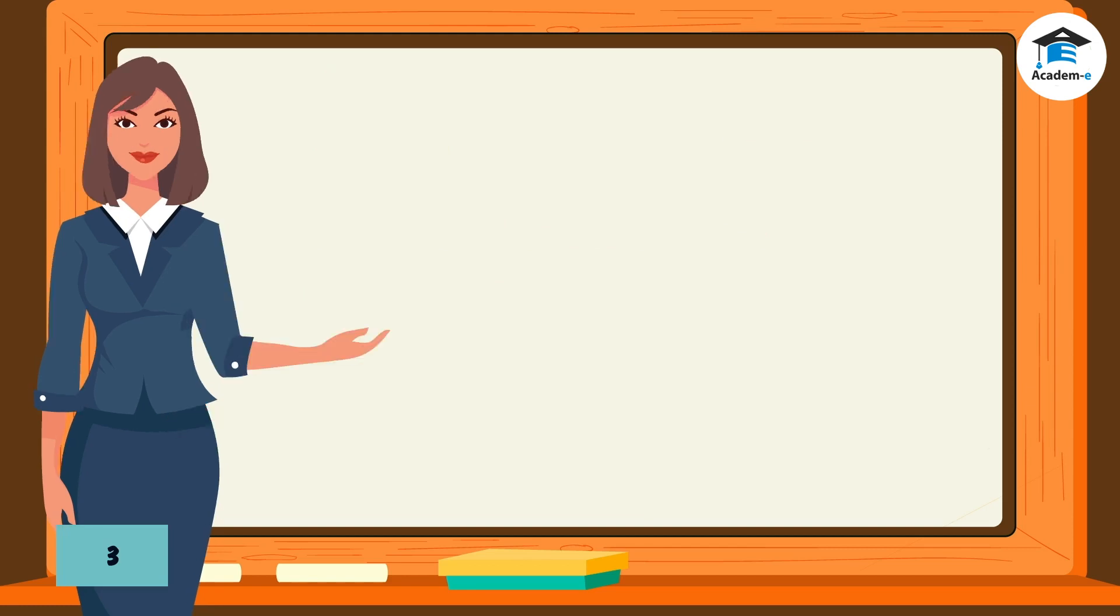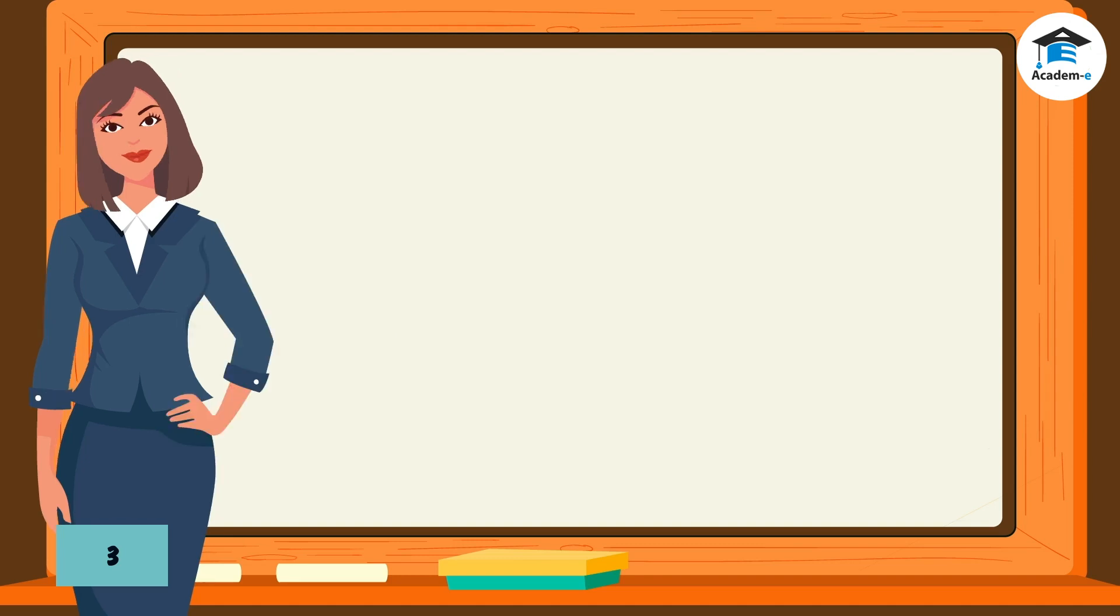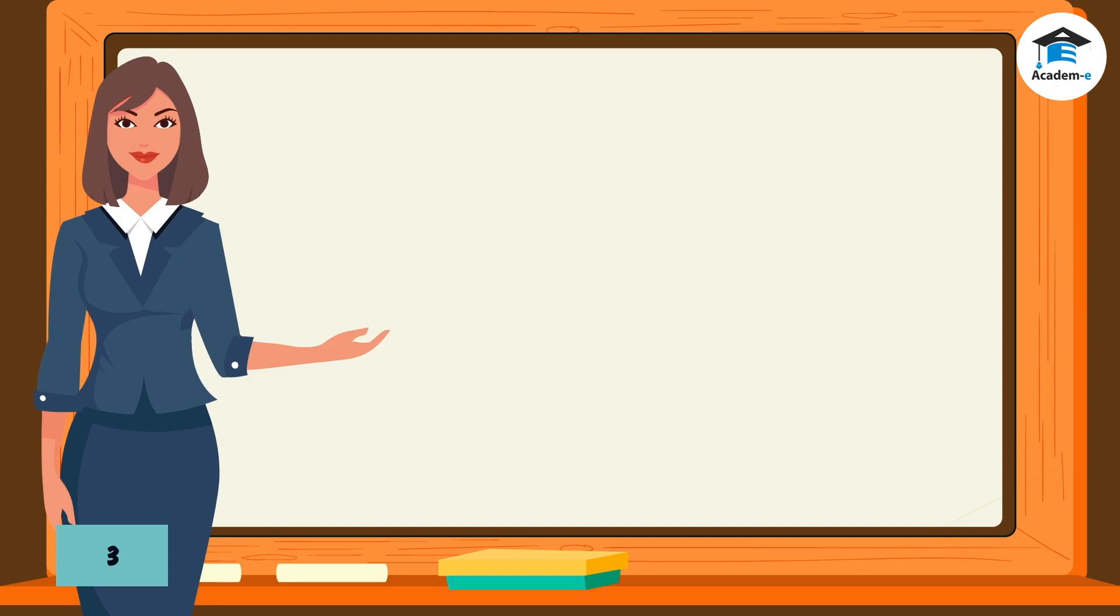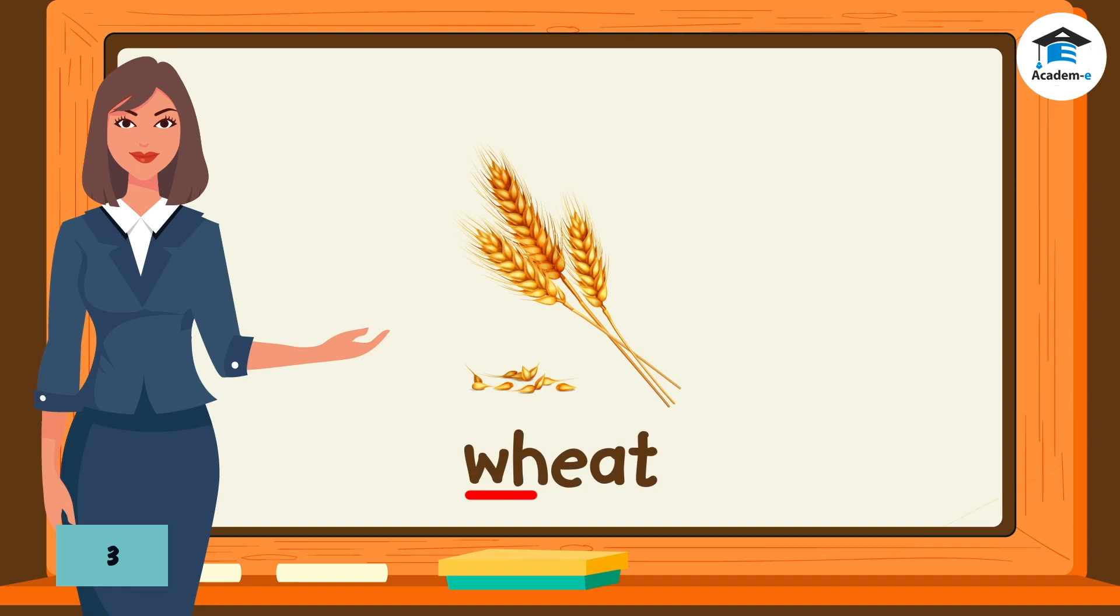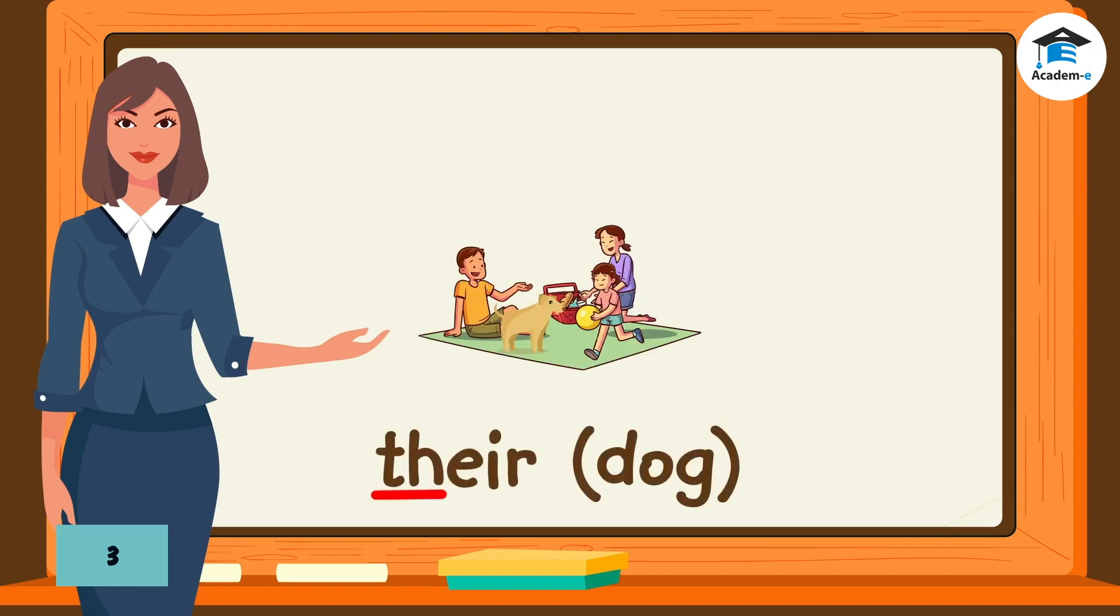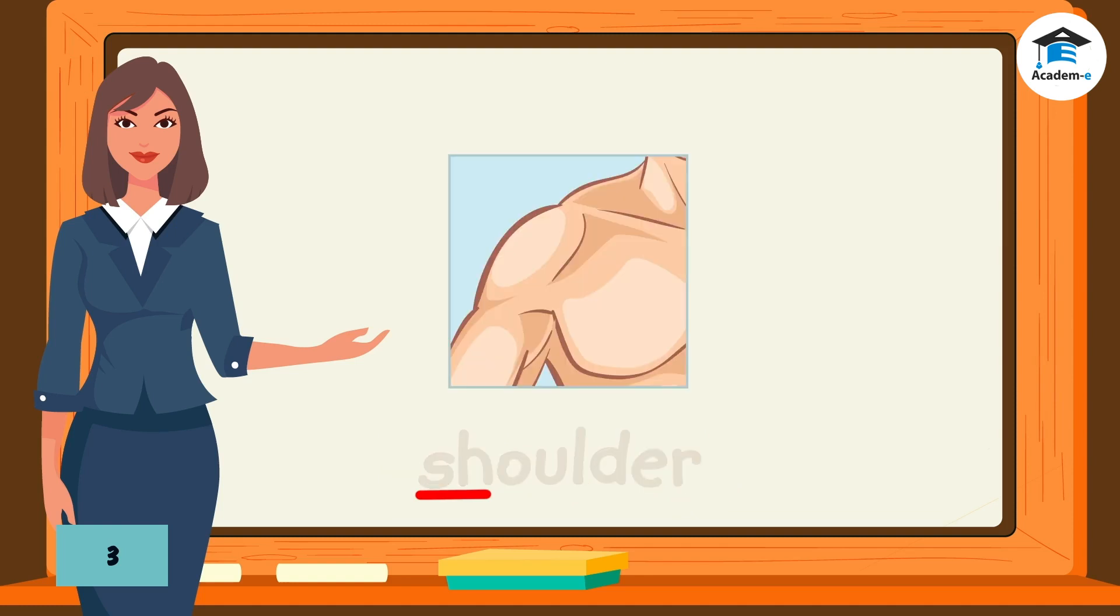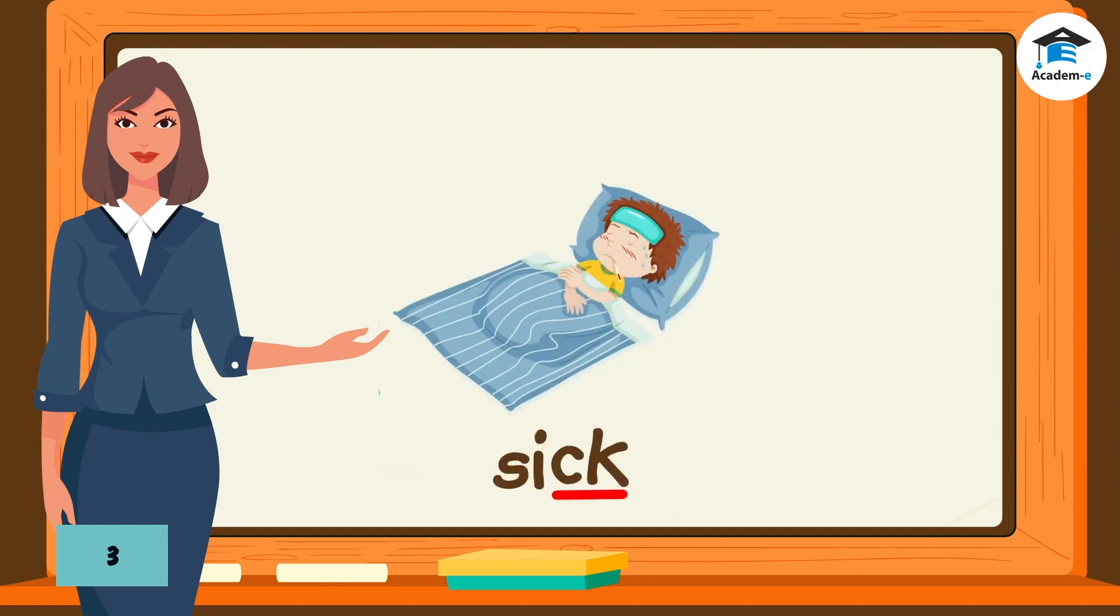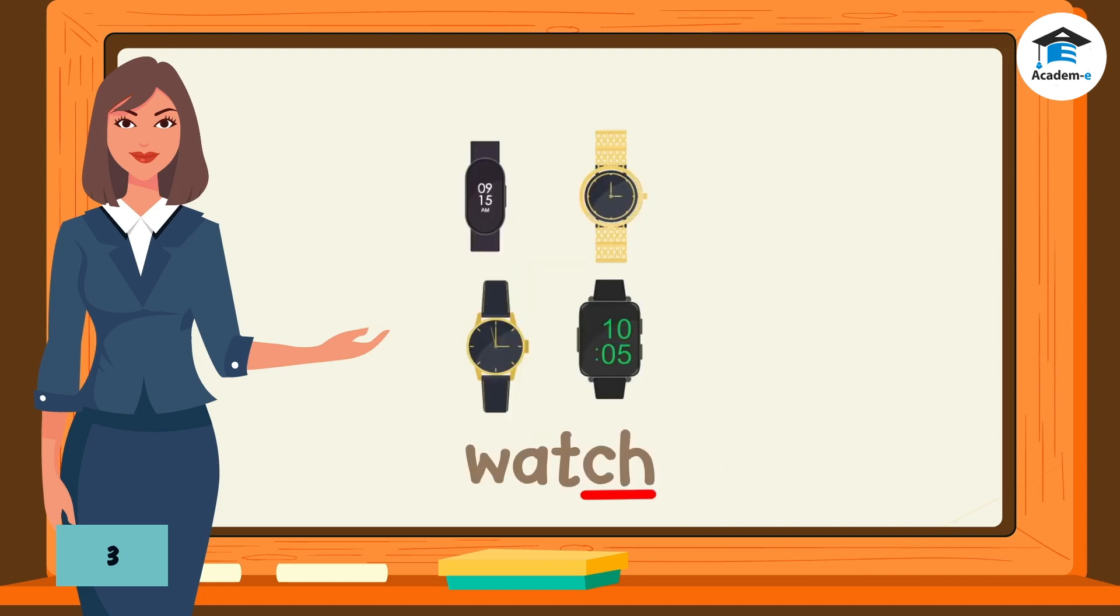Hi kids, you've already learned about vowel digraphs. Now let's learn about consonant digraphs. But before we begin, read the following words and notice the sound produced by the underlined letter combinations: pitcher, wheat, trophy, there, shoulder, sick, watch, whale, that, teach.